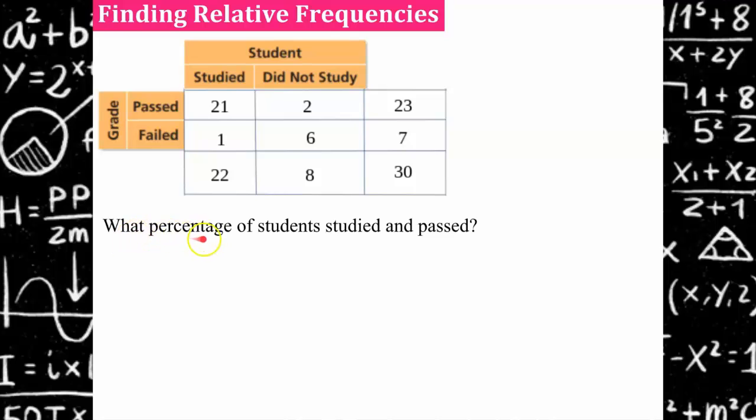We're asked what percentage of these students studied and passed. We go up and we want to make a ratio of the number of students who studied and passed out of the total number of students surveyed. We look at our table and we know that 21 of our students studied and passed and of the students that we surveyed there were 30. So 21 out of the 30 students studied and passed. So 70 percent of the people surveyed studied and passed.